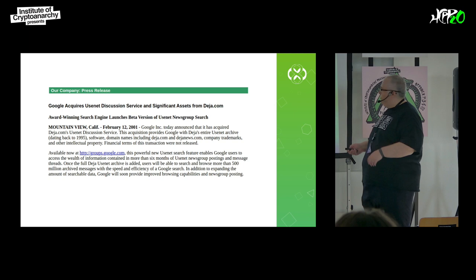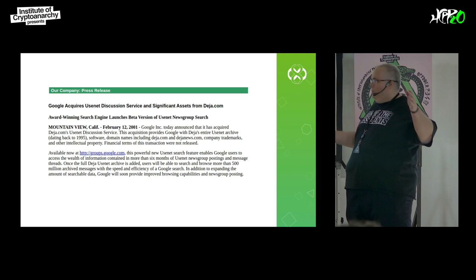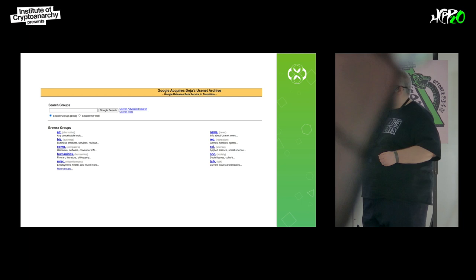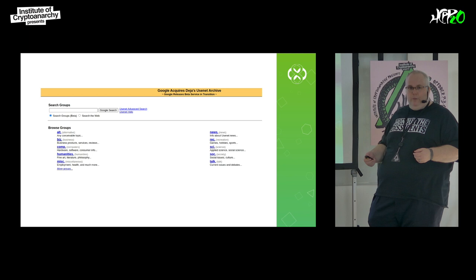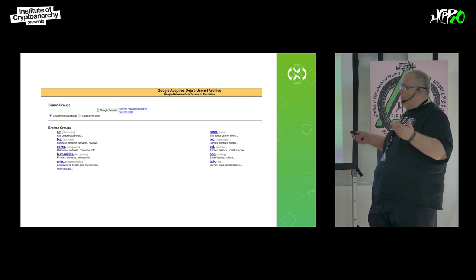In 2001, Google bought a company called Deja News. Deja News had been a web-based Usenet provider with archives all the way back from the early days of Usenet. Google created a service called Google Groups, and that service is still available today. But the problem is Google has never done any kind of spam filtering. So anyone right now can go onto Google Groups, find a newsgroup, start typing, set up a bot, set up a spam bot, and spam the hell out of Usenet — there's nothing stopping them.